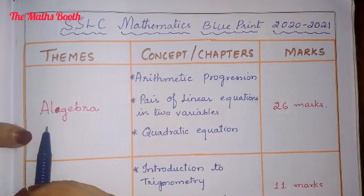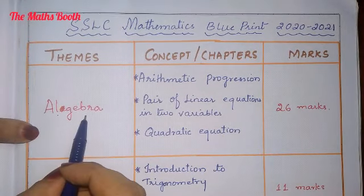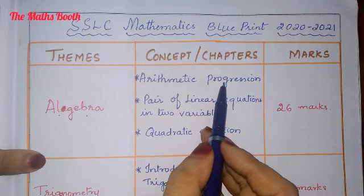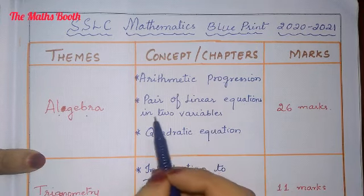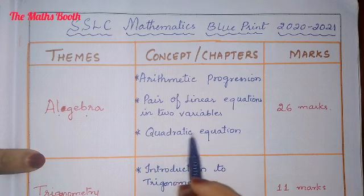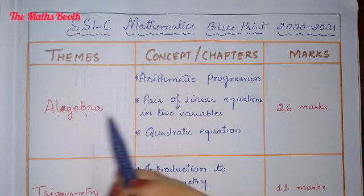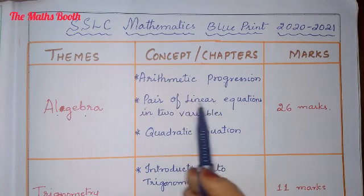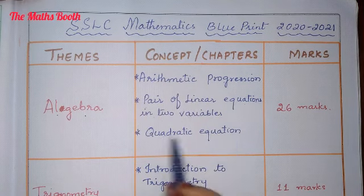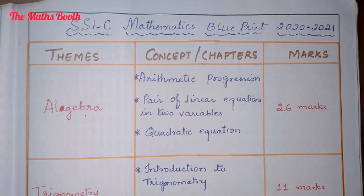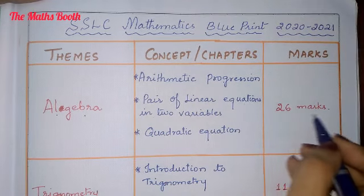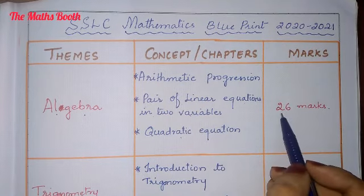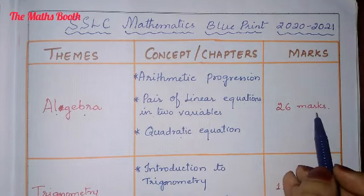In Theme 1, that is Algebra, the topics are Arithmetic Progression, Pair of Linear Equations in Two Variables, and Quadratic Equations. From these three chapters, you will get 26 marks questions.